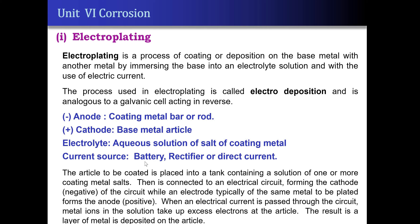The current source may be either a battery or direct current. When the electrical circuit is completed and current is passed, metal ions are liberated at the anode and electrons move towards the cathode. With the help of the electrolyte, the metal ions come to the cathode and are reduced back to metal, which then gets coated on the cathode.